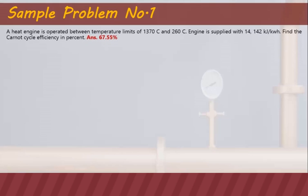A heat engine is operated between temperature limits of 1,370 degrees Celsius and 260 degrees Celsius. The engine is supplied with 14,142 kJ per kWh. Find the Carnot cycle efficiency in percent.